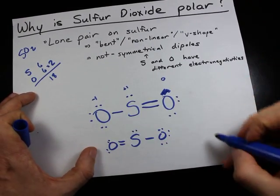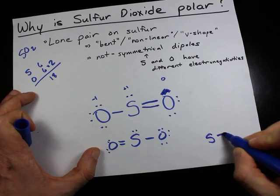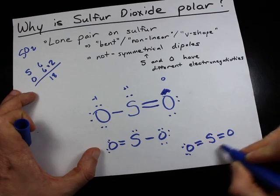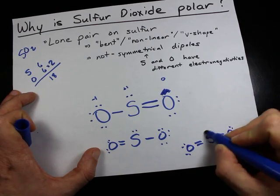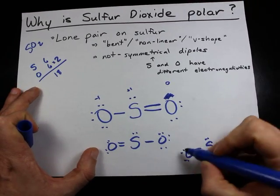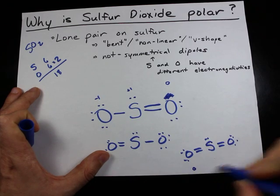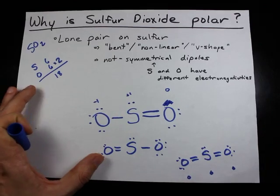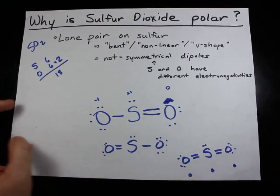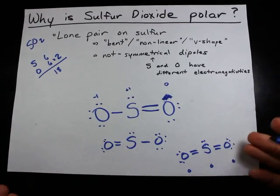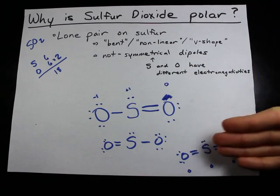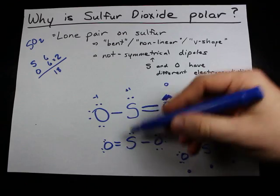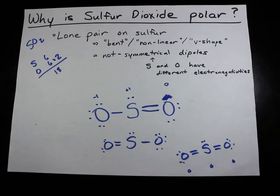There is also another valid resonance structure where the sulfur is double bonded on either side. In that structure, each oxygen has a formal charge of 0, and the sulfur has a formal charge of 0 as well. In any case, all three of these are valid resonance structures, and all of them have a lone pair on the sulfur atom.